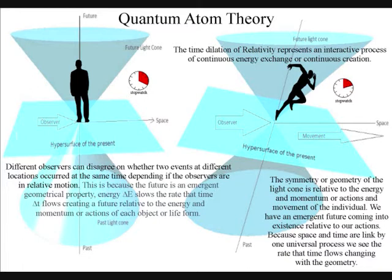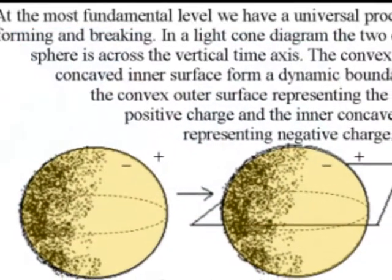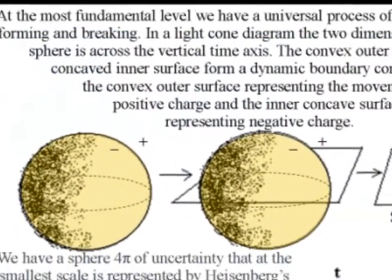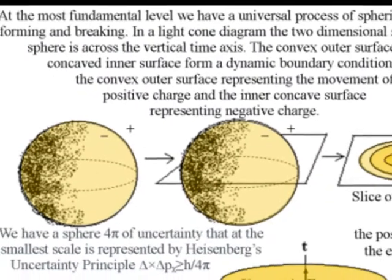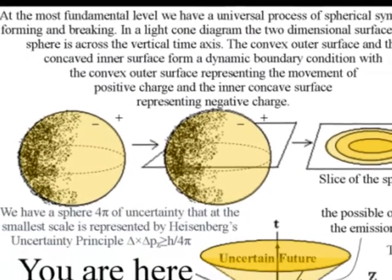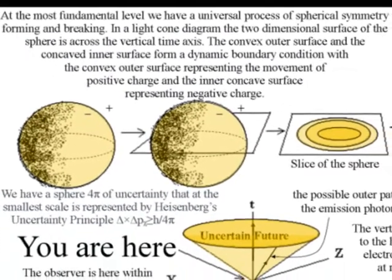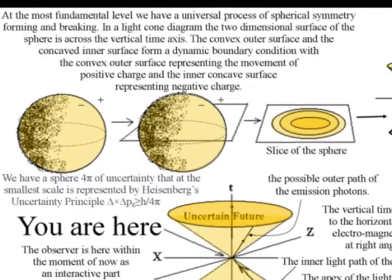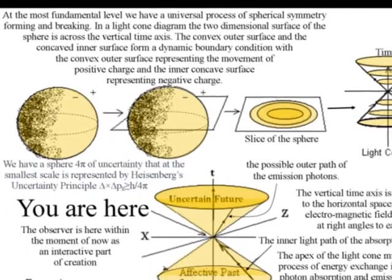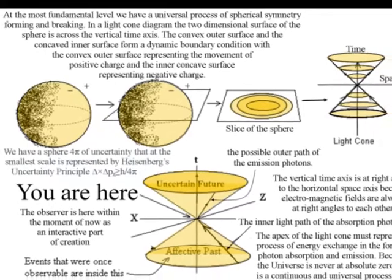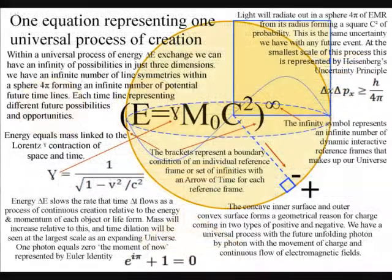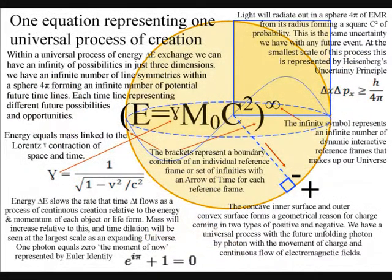At the most fundamental level, this is a process of symmetry forming and breaking that forms greater degrees of freedom for entropy or disorganization, and also greater degrees of freedom for the diversity and complexity of life, with the whole theory being explained by just one equation representing the dynamic geometry of this process.